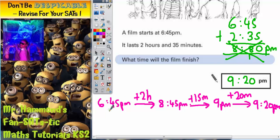So the easiest thing to do is to break it down and draw yourself a little flow chart. So 2 hours to begin with takes us to 8:45pm, then 15 minutes to 9 o'clock, then 20 minutes to 9:20pm and you can see that we've done 2 hours and 35 minutes altogether.